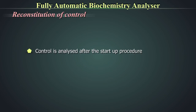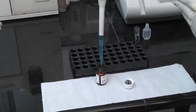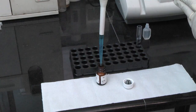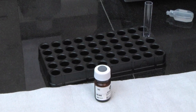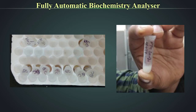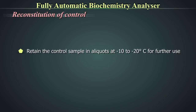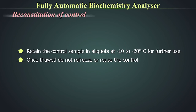Reconstitution of control: The control sample is analyzed after the start-up procedure. Controls are in lyophilized form and reconstituted before use. Using a calibrated volumetric pipette, reconstitute the control with 5 ml of commercially available deionized water. Allow the control to stand for 30 minutes at room temperature, swirling intermittently. Prepare aliquots as per requirement and label them with lot number and date of expiry. For testing, take out a single vial, mix several times to ensure homogeneity, and remove the stopper before sampling. Retain control samples in aliquots at −10 to −20°C. Once thawed, do not refreeze or reuse the control.